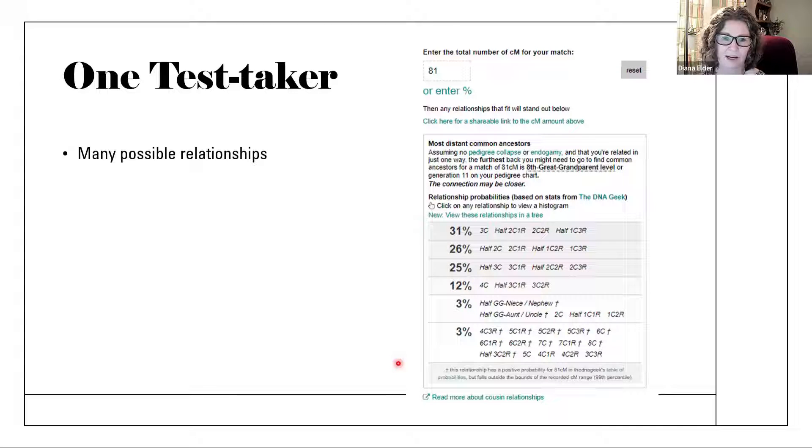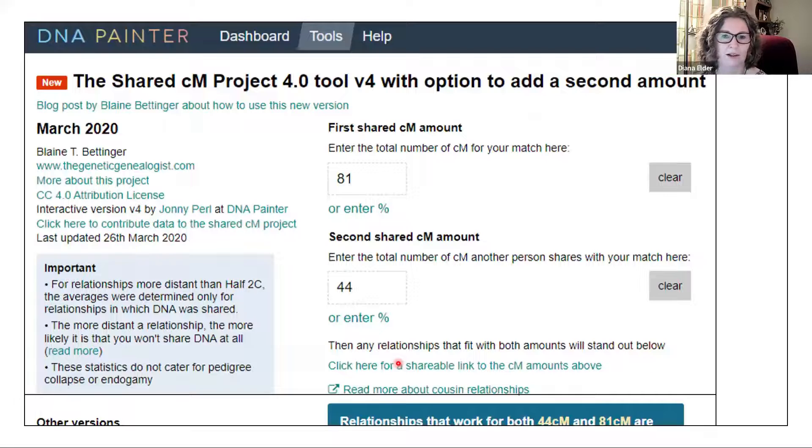When I go and add the option for using a second amount, you'll see my other test taker in the same generation only matched 44. And of course, that's common to match different amounts for the same relationship. But these two will have the same relationship because they're the same generation, and it'll be really fun to see if this could help me in having two test takers. So how do you find this ability to add a second amount?